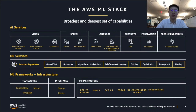AWS Deep Learning Containers are Docker images pre-installed with deep learning frameworks that make it easy to deploy custom machine learning environments quickly and allow the customer to skip the complicated process of building and optimizing the environment from scratch. We also have Greengrass to extend AWS AI to mobile devices.